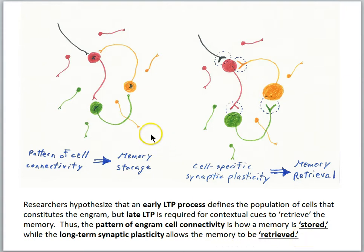So in this view then, memories are stored in the pattern of cell connectivity. So some population was activated during the actual training, and some subset of those will, in a sense, be the engram, the storage of the memory.